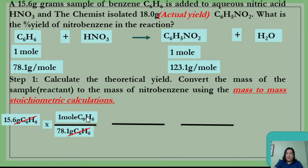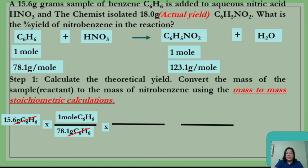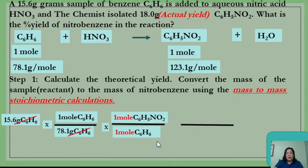Since we are now at the mole stage and need to cancel 1 mole of benzene, we use the stoichiometric coefficient from the balanced equation. The substances involved are benzene (C6H6) and nitrobenzene (C6H5NO2). For every 1 mole of benzene, it produces 1 mole of nitrobenzene. So 1 mole of benzene goes in the denominator, and 1 mole of nitrobenzene goes in the numerator, cancelling the mole unit of benzene.